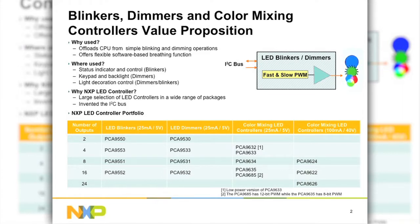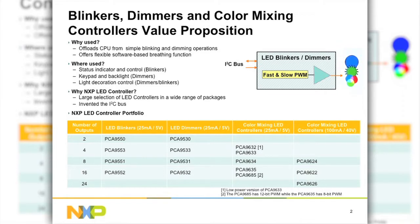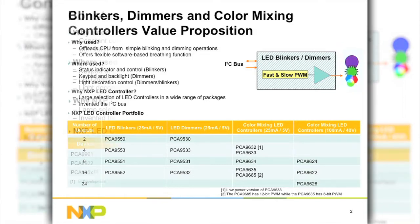They may also be used as dimmers in keyboard or LCD backlighting applications or for controlling brightness. NXP has a large selection of LED controllers with different numbers of outputs, varying PWM bit width, various output drive currents, voltage tolerance, and the devices come in a wide range of package options. The NXP LED controller portfolio spans from 2 outputs to 24 outputs and includes LED blinkers, LED dimmers, and color mixing dimmers which can drive up to 100 mA per output and the outputs are 40V tolerant.